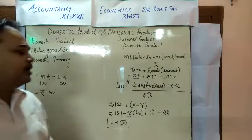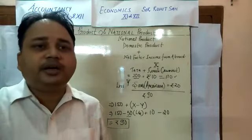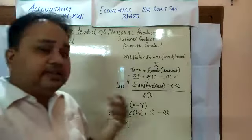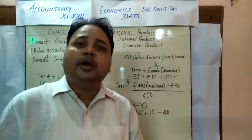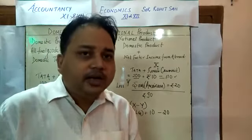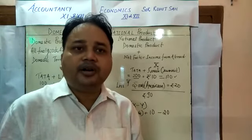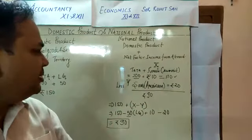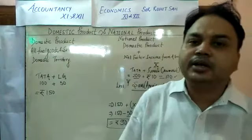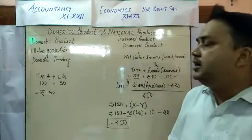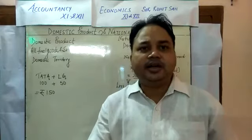The formula is simple: whenever you want to calculate the national product, first calculate the domestic product, then add the net factor income from abroad. Net factor income from abroad means whatever income is earned by Indians in foreign countries, minus whatever income is earned by foreigners in our territory. So 90 rupees is our net national product. I hope you understand this topic. In the coming video I will explain how to calculate the different aggregates. Thank you.